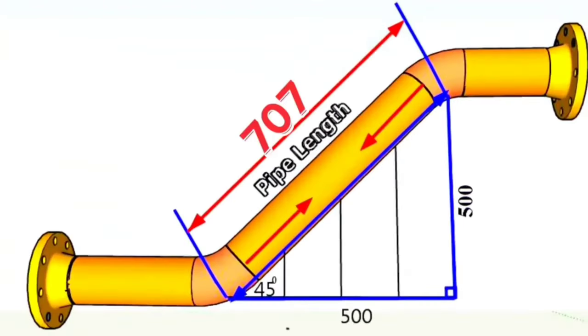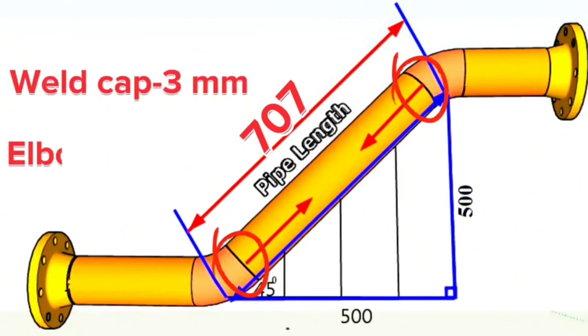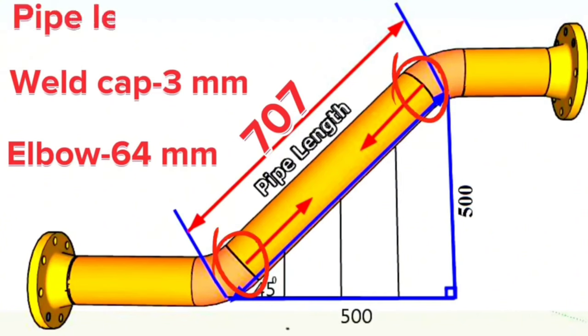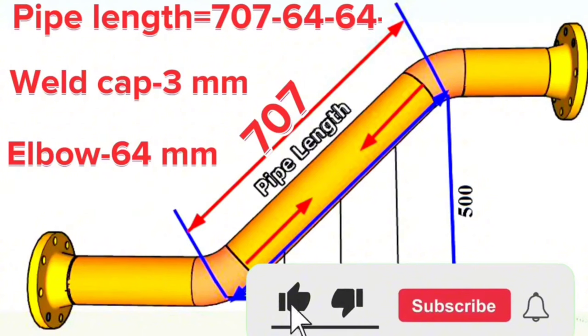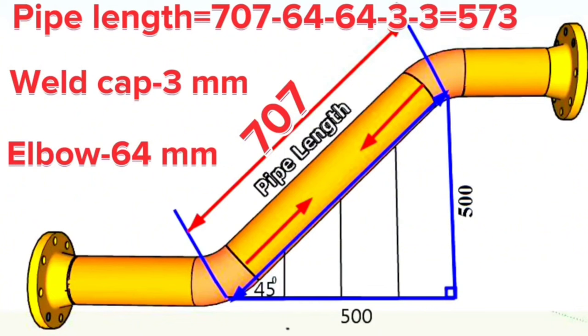In this isometric, there are welds in two places. If we count each weld gap as 3 millimeters and the elbows as 64 millimeters, then the length of the pipe will be equal to the total length of 707 millimeters minus 64 millimeters minus again 64 millimeters minus 3 millimeters minus 3 millimeters.